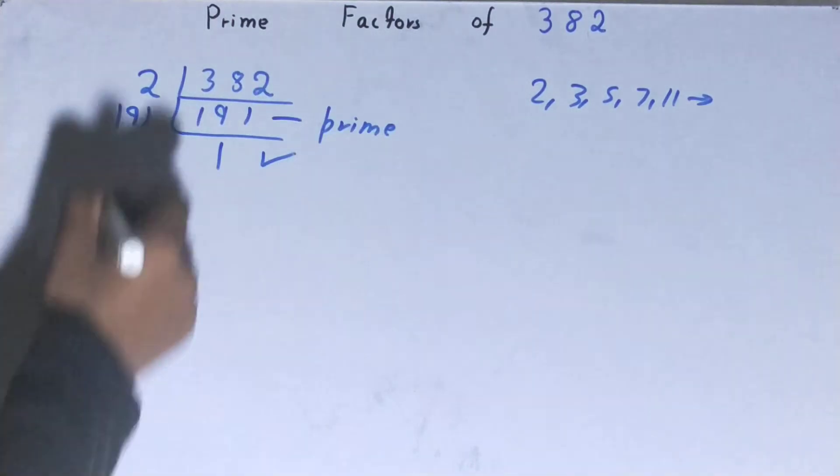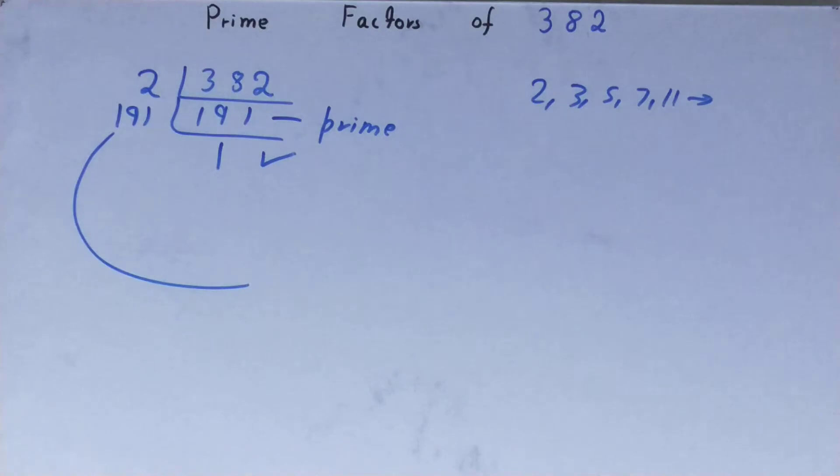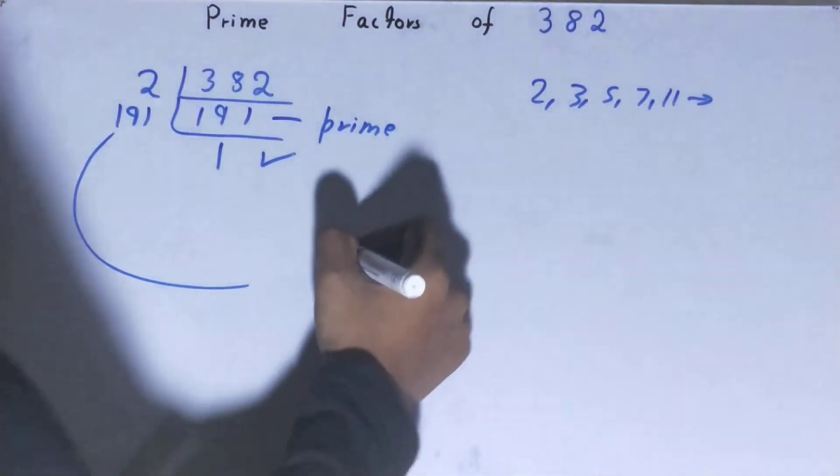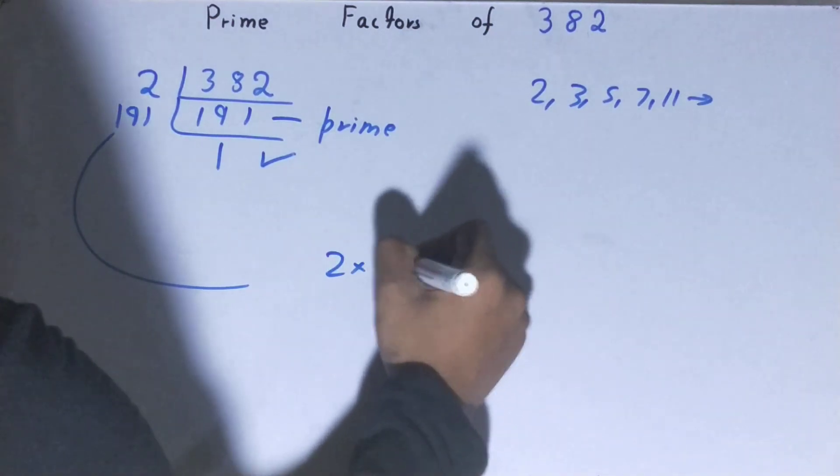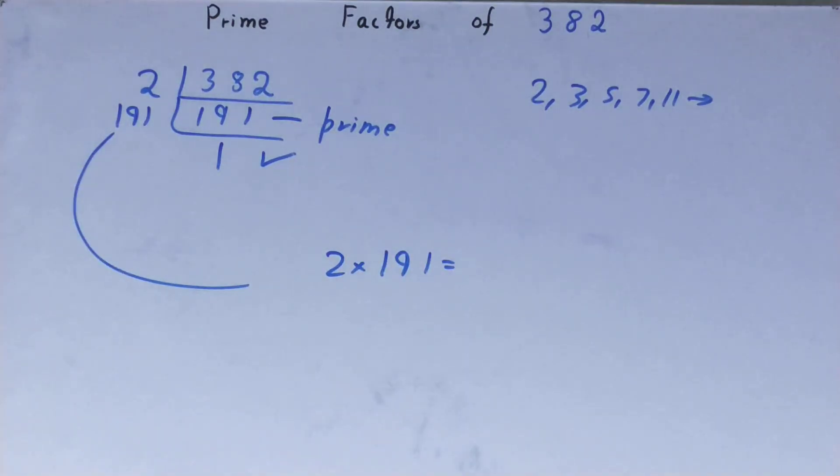When you do so, you'll be left with 1, and once you're left with 1, the work is done. Whatever you have on the left-hand side will be the set of prime factors for the number 382, that is 2 × 191.